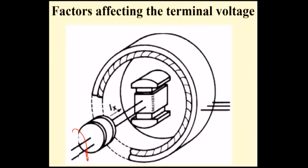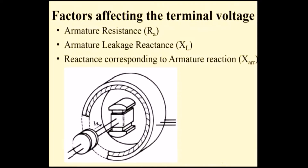This is rotating field stationary armature. You are rotating the field, so EMF is induced and the EMF is normally available across the terminal. What are all the factors affecting the terminal voltage of the alternator? One is armature resistance and another one is armature leakage reactance.